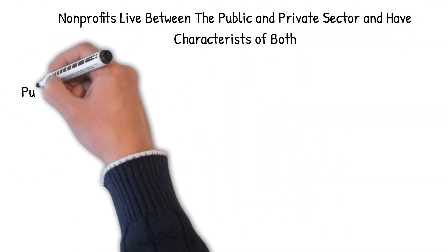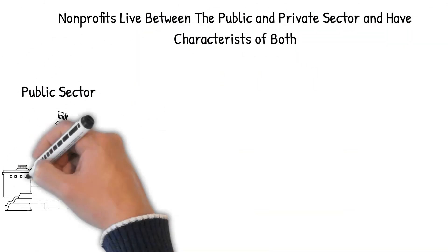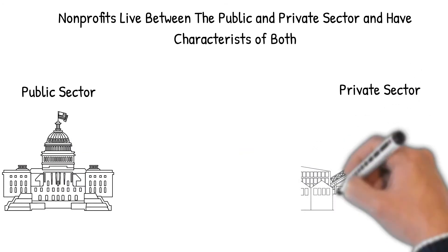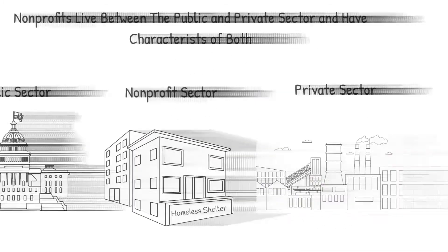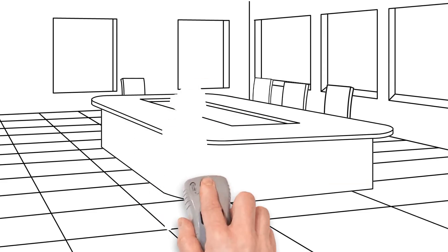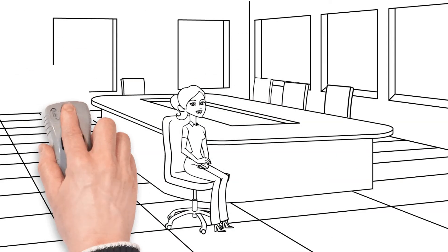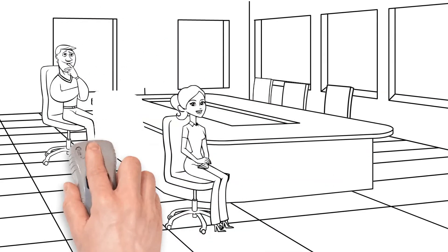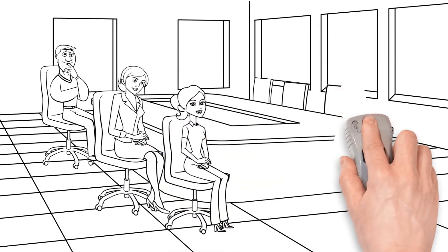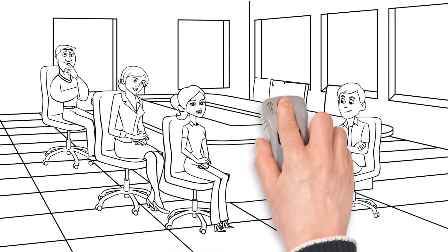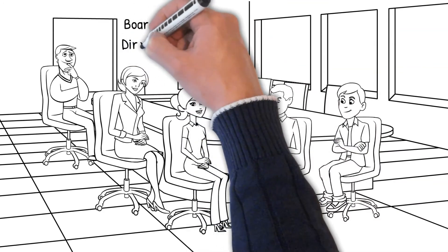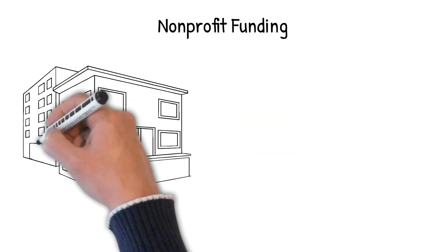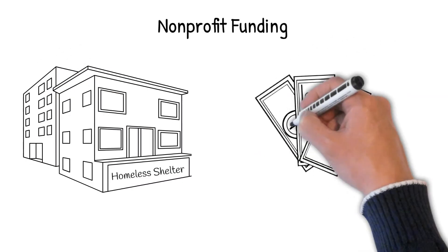Nonprofits are sometimes referred to as the third sector because they live between the public and private sectors and have characteristics in common with both. Nonprofits are also governed differently than for-profits and have a different structure, including a board of directors or board of trustees, which is responsible for keeping the organization on track and legally bound to doing what is in the best interest of that organization.